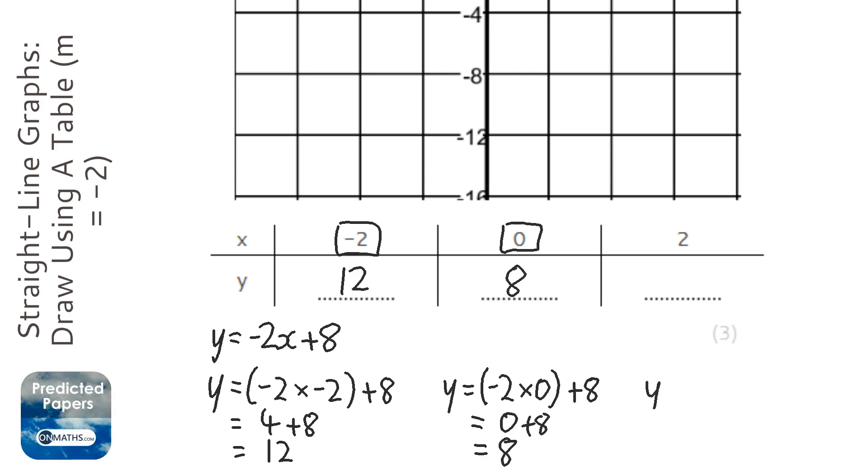And then we've got the last one. So y equals minus 2 times 2 and then plus 8. Now negative times positive is negative, 2 times 2 is 4, so that's going to be 4. We've got three points here.